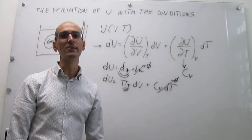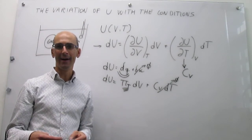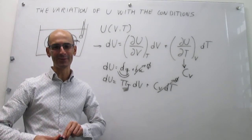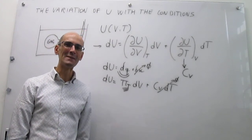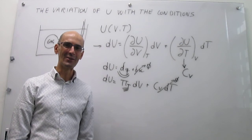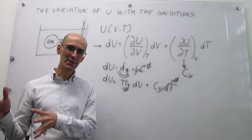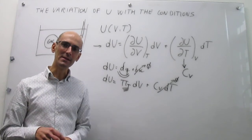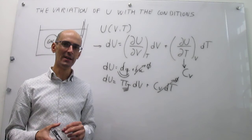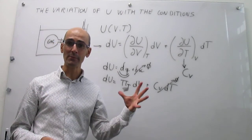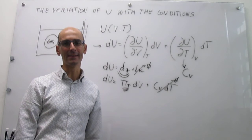Today, with better technology, we certainly can do this, and this is how you could determine internal pressures for substances. To summarize: in this video we have seen the variation of the internal energy with respect to volume and temperature. The variation of the internal energy with respect to volume is specified by the internal pressure π_T, and the variation of the internal energy with temperature is specified by the heat capacity at constant volume C_V.